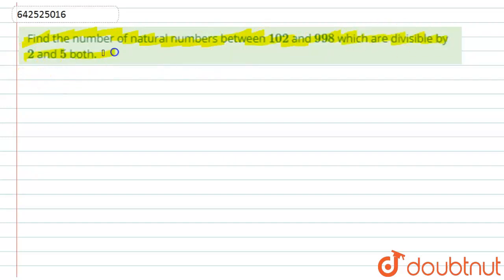Let us start with the solution. First of all, what is given to us? It is given to find the number between 102 and 998 which are divisible by 2 and 5, okay?